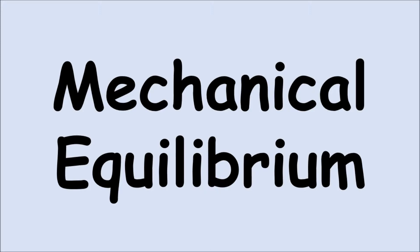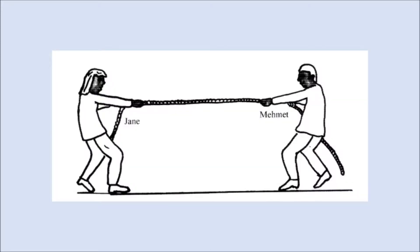For instance, let's say Mehmet and Jane are pulling on a rope, yet there's no movement. They're pulling with equal force. Therefore, they would be in static equilibrium. If Mehmet gets the upper hand and applies a greater force than Jane and there's movement to the right, then Jane applies a force equal to Mehmet, but the movement continues to the right. That is dynamic equilibrium.